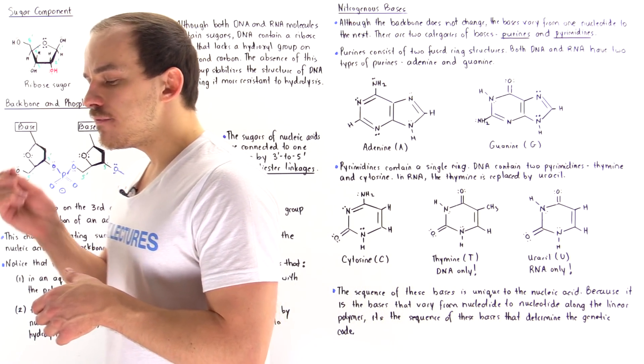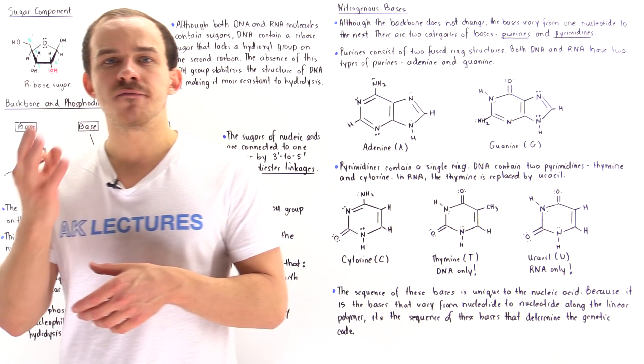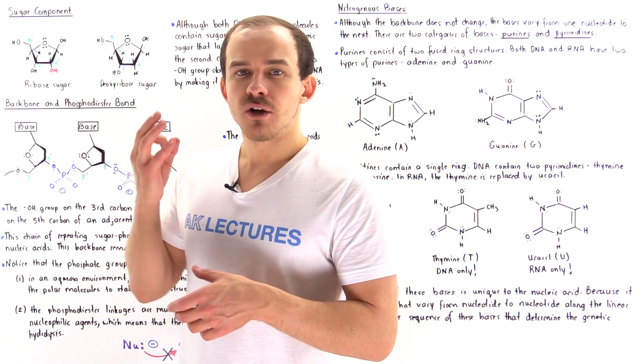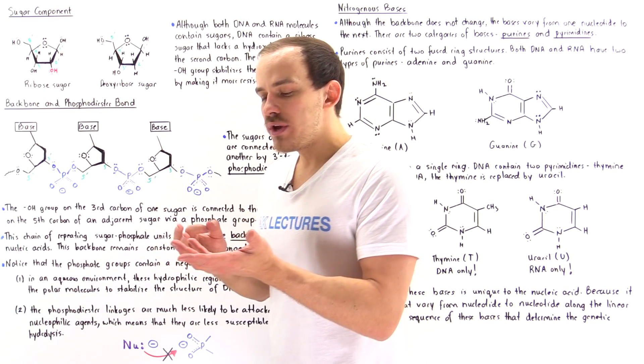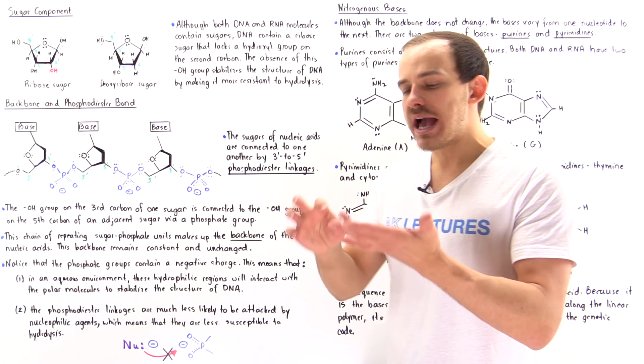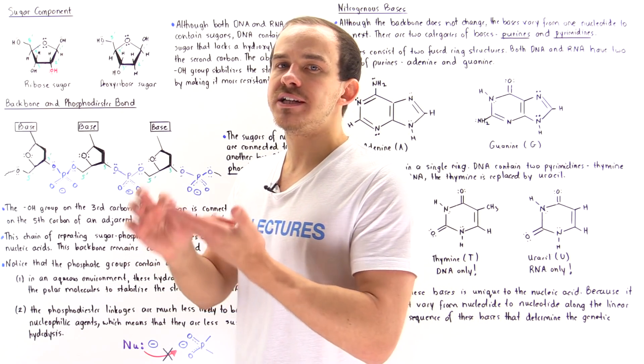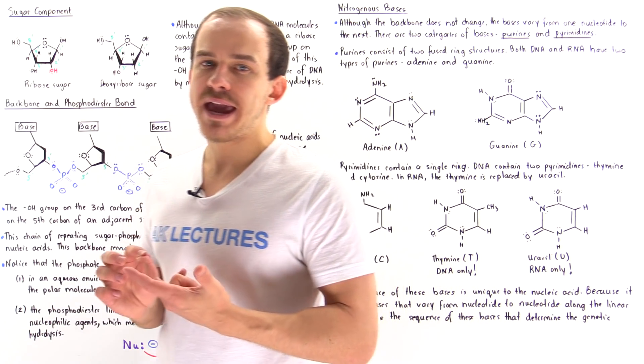Every one of these nucleotides consists of three different groups: a sugar molecule, a phosphate group, and a nitrogenous base.